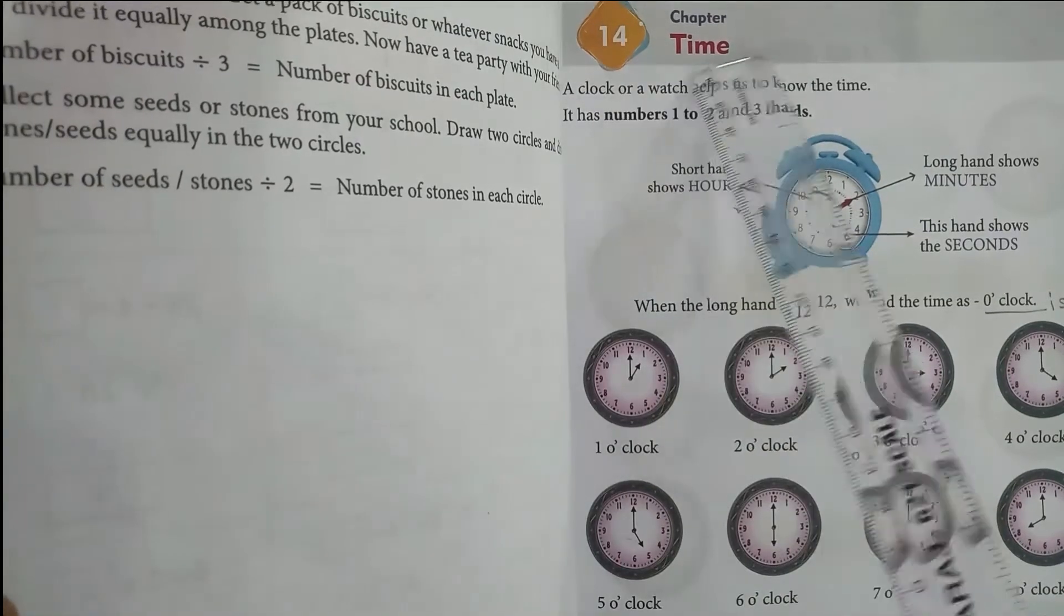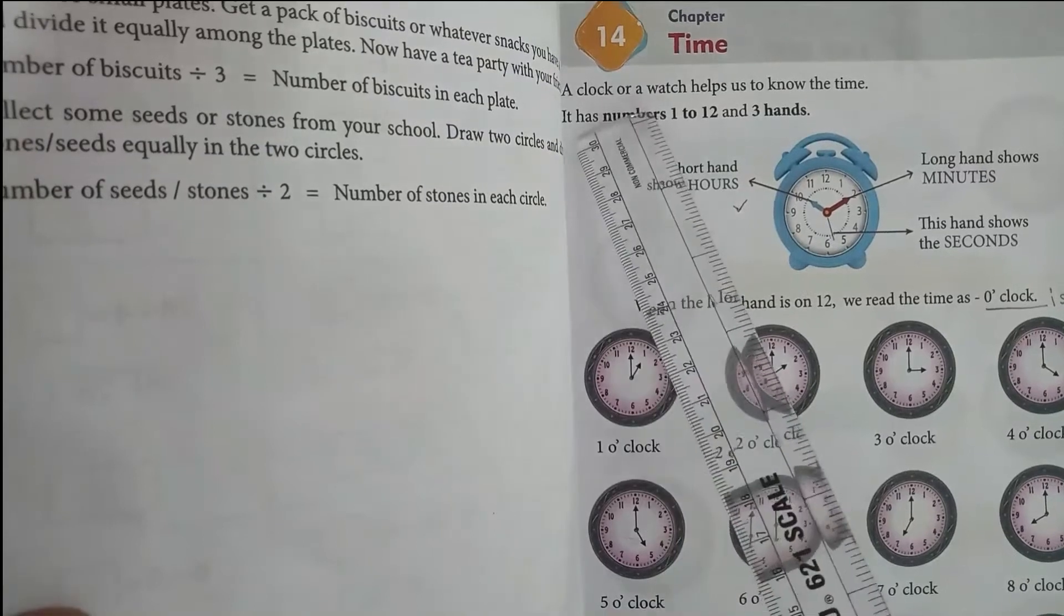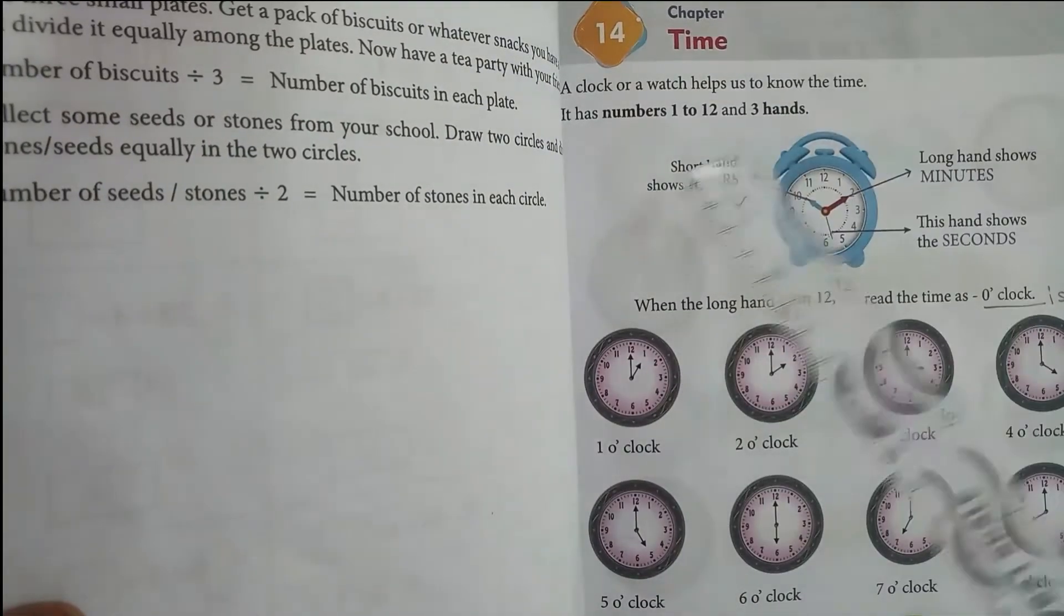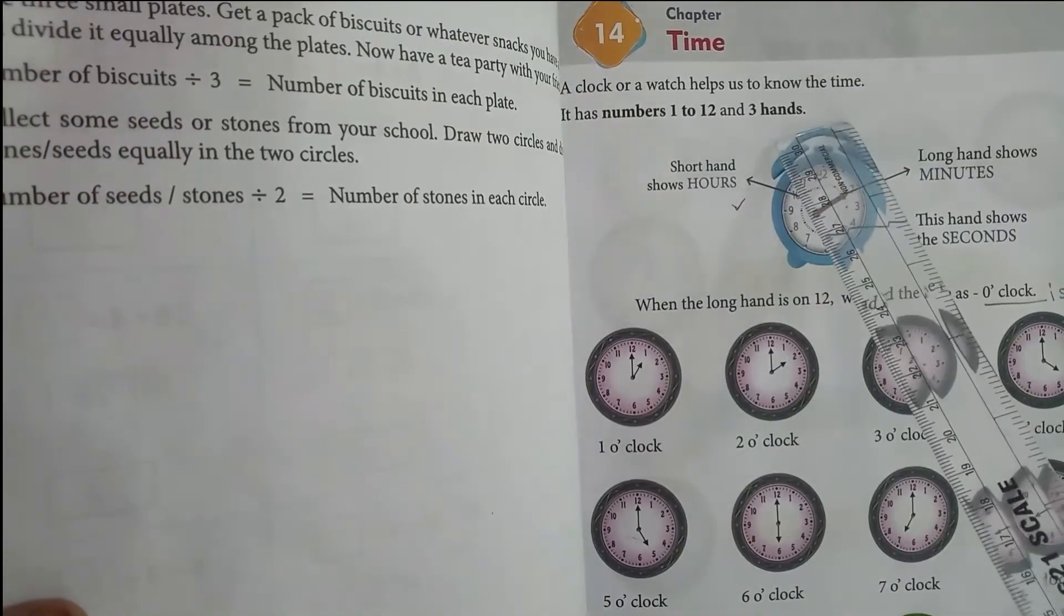Good morning children. Today we are going to learn chapter 14: Time. A clock or a watch helps us to know the time. It has numbers 1 to 12 and 3 hands.